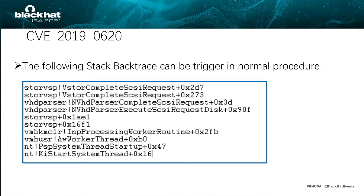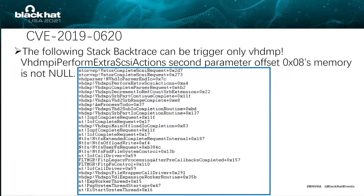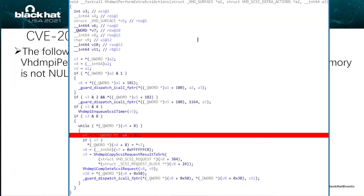Let's analyze this vulnerability. The following stack backtrace can be triggered in normal procedure, so leave it alone. The following stack backtrace can be triggered only when perform_extra_SCSI_action's second parameter at a certain offset has a non-zero value in memory.